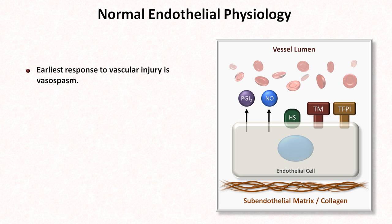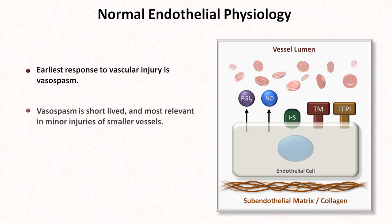The earliest response to vascular injury is vasospasm, which essentially occurs instantaneously. Vasospasm is short-lived, however, and most relevant in minor injuries of smaller vessels. While the vasospasm of endothelial cells following injury is important, platelets have a much more important and complex role.